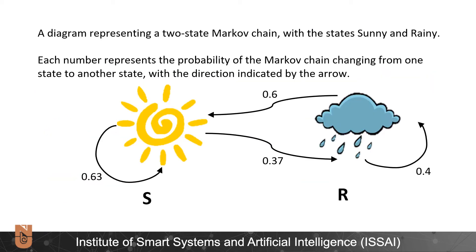Here we can see the two state HMM with states sunny and rainy and numbers representing the probability of the Markov chain changing from one state to another state with the directions indicated by the arrows.